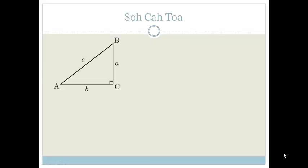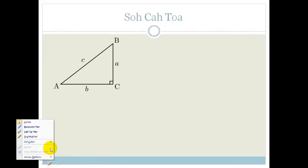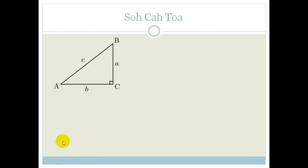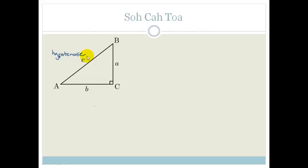To start with, we are only ever going to be looking at right-angled triangles. Let's have a look at our little right-angled triangle here. Since this is the 90 degrees there, that means that this side here would be called the hypotenuse. That is the hypotenuse.